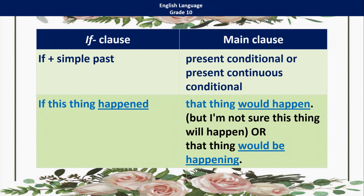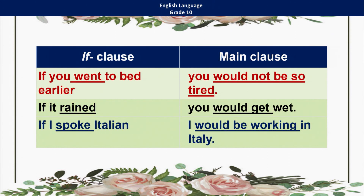We can use simple past for the if clause, and in the main clause we can use the present conditional or present continuous as well. If this thing happened, that thing would happen. Or we can say: if this thing had happened, the other thing would be happening. For example: 'If you went to bed earlier, you would not be so tired' — but he has not gone to bed earlier. 'If it rained, you would get wet.' 'If I spoke Italian, I would be working in Italy.' So the if clause is in simple past and the result part uses would plus the verb, or would be plus an -ing form.